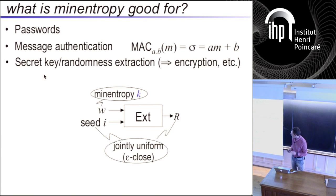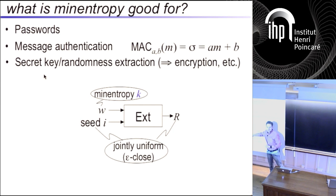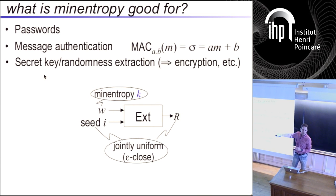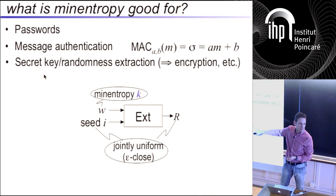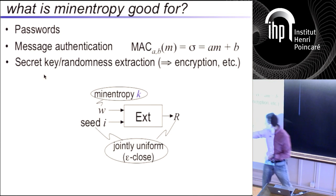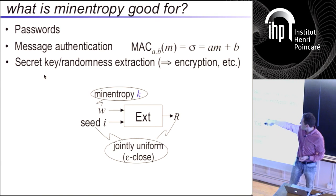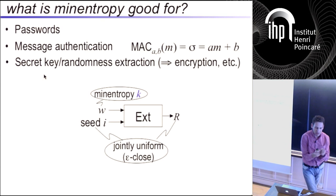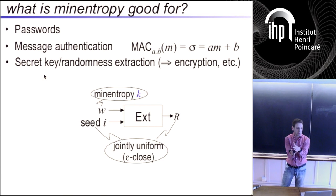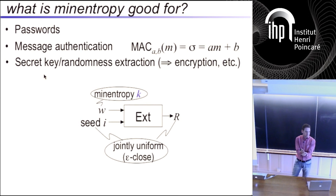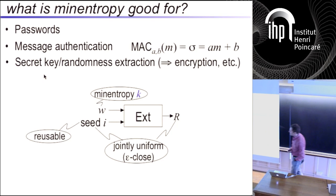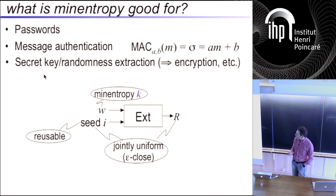The secret part has some min entropy, the public seed is uniform, and out comes a uniform string. An extractor is an algorithm with these properties. Iftah showed one extractor that gets you a uniform bit by taking a dot product — bitwise dot product mod two. There are more extractors. Here's a very important fact: this seed, this public seed, does not ruin the uniformity of R — it's like a catalyst. You can reuse it. It participates in the reaction, but you can then use it again and again. This public seed is only needed to get the uniform bits out of the min entropy string.